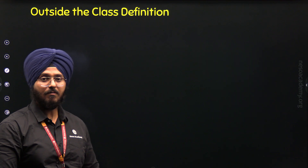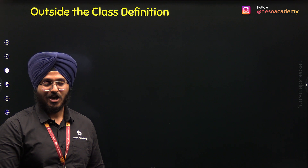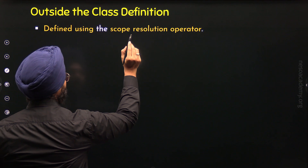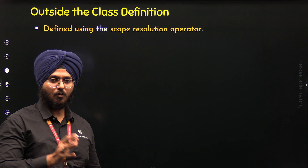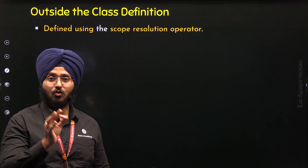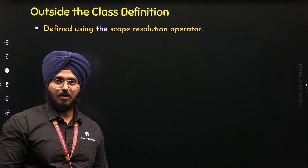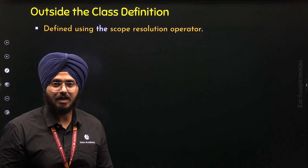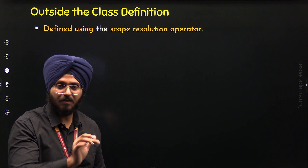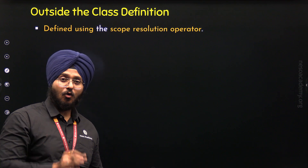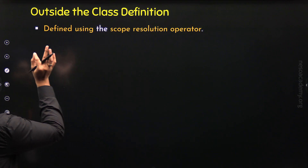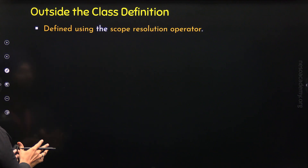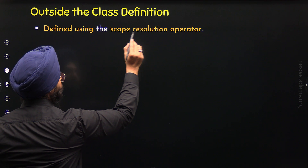How can we define member functions outside the class definition? We can define member functions outside the class with the help of the scope resolution operator. We already know one use case of the scope resolution operator — with it, we can access global variables within a function, even if we define a local variable with the same name as a global variable. The second use case is to define member functions outside the class definition.